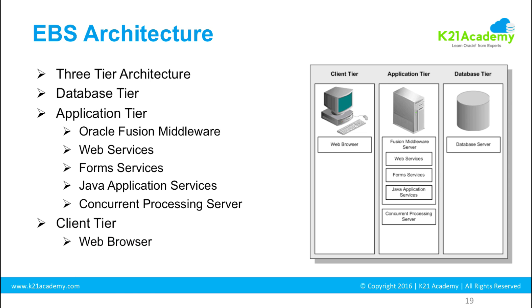So the application tier sits in the middle. The client tier is a web browser. This is a simple three-tier architecture: the client is where users are, the application tier is where business logic and the underlying technology stack sit, and the database tier is where the data sits. Some logic may be in the database tier, but business logic — such as how an order processes in an order management system — should be in the application tier. The client accesses data via the application tier, which in turn connects to the database.